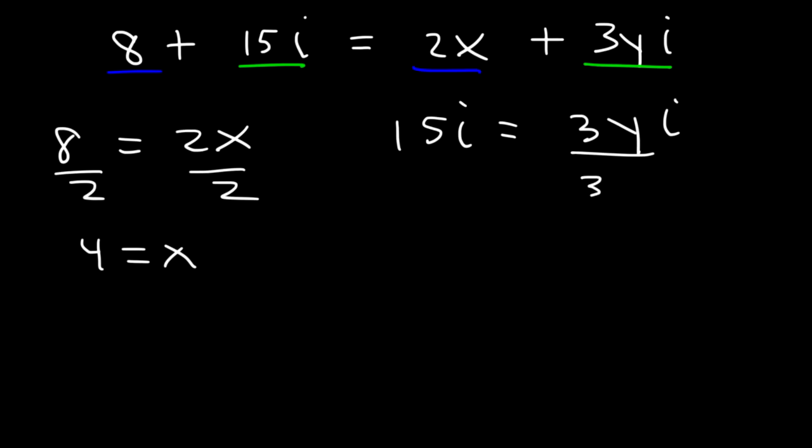And to find y, we need to divide both sides by 3i. 15i divided by 3i is 5. The i values will cancel. And so x is equal to 4 and y is equal to 5.